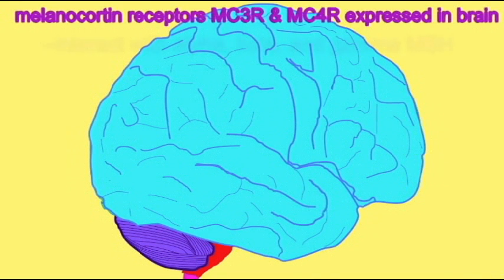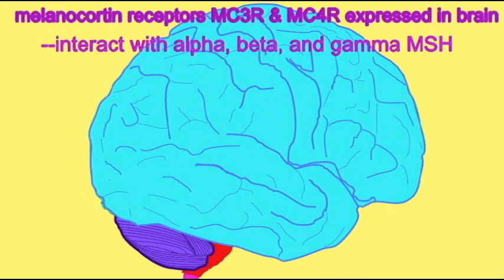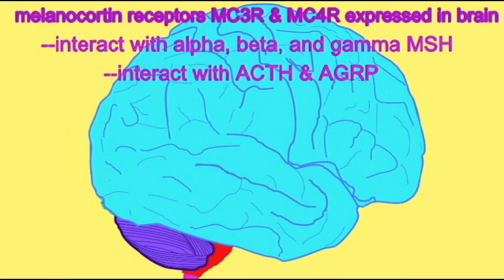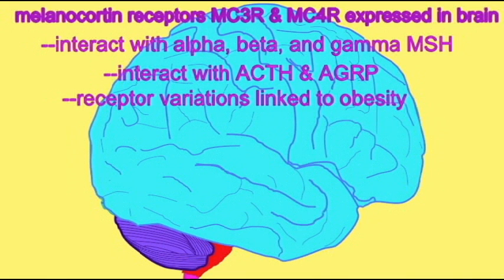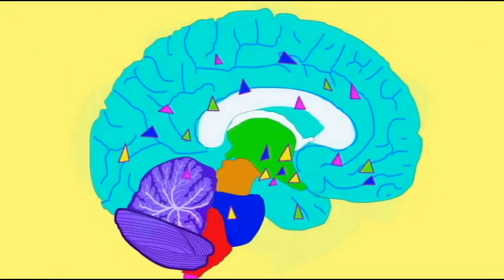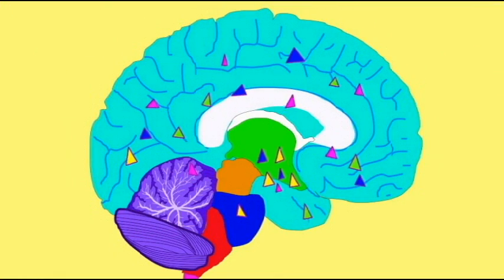There are diverse melanocortin receptors which interact with some of these hormones. MC3R and MC4R are expressed in various regions of the brain, where they interact with alpha, beta, and gamma MSH. They interact with ACTH.